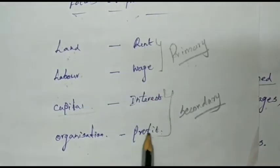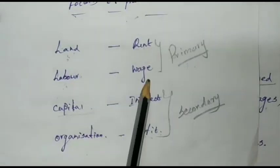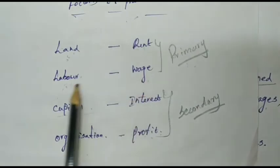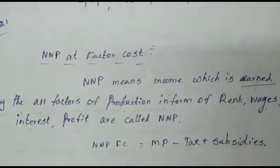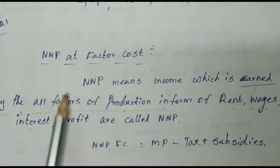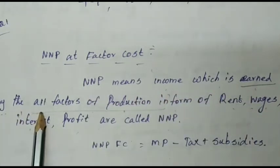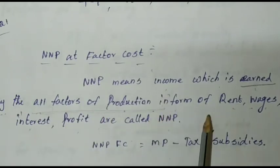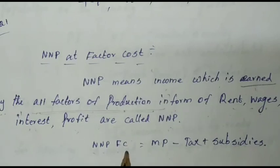Wages go to labor, interest goes to capital, and profit goes to organizations. This income is the factor cost. NNP at factor cost is the income earned by all factors of production.